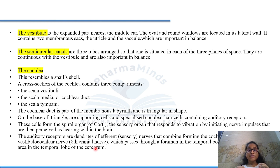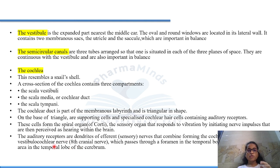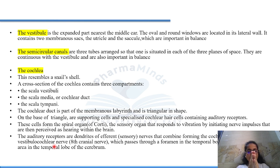These auditory receptors are dendrites of different sensory nerves, and they finally combine forming the cochlear part of the vestibulocochlear nerve. Hearing is possible because of the 8th cranial nerve — the vestibulocochlear nerve. The dendrites combine to form the cochlear part, and this vestibulocochlear nerve passes through the foramen in the temporal bone to reach the hearing area.